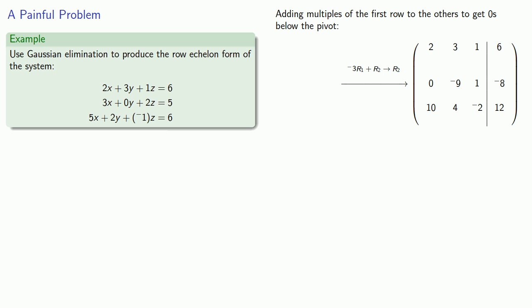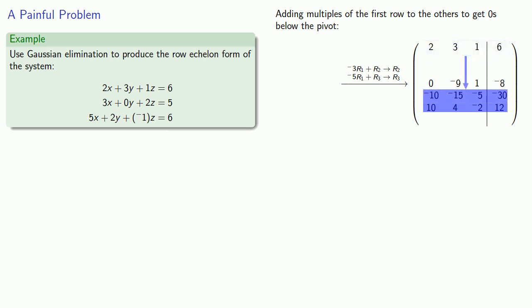Likewise, if we take a look at the third row, multiplying the first row by negative 5 and adding will eliminate the leading coefficient. So we'll multiply the first row by negative 5 and add it to get a new third row: 0, negative 11, negative 7, negative 18. Now that we have a new third row, we don't need the two rows we used to produce it and we can eliminate them.